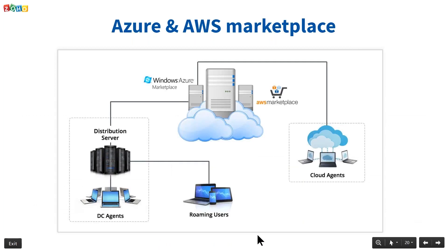You can install the Desktop Central server on a physical machine or a VM, or place it in AWS or Azure. There are many advantages to placing your server on a cloud platform. For managed service providers, hosting in the cloud is advantageous when managing computers from different customers' networks. It's also cost-effective since you don't need to invest in or maintain hardware infrastructure, and roaming user management becomes much easier. Desktop Central will be available on cloud very soon.